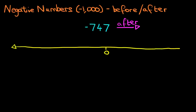We've got zero in the middle, minus 1,000 on the left, and 1,000, or plus 1,000, on the right. So the number minus 747, let's write that down. Where do we think that's going to be? It's going to be roughly about here. It's minus 747.